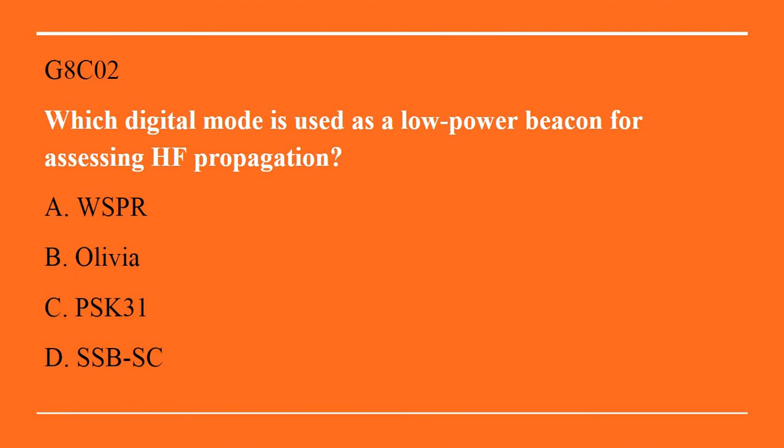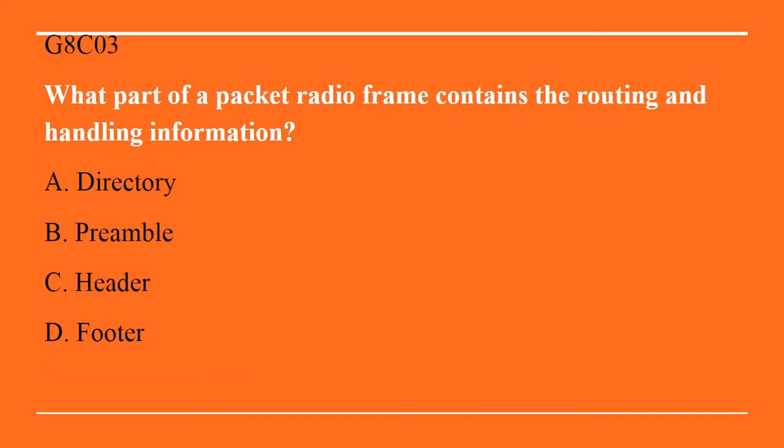G8C02: Which digital mode is used as a low-power beacon for assessing HF propagation? A. WSPR. B. Olivia. C. PSK31. Or D. SSB-SC. The correct answer is A, WSPR.